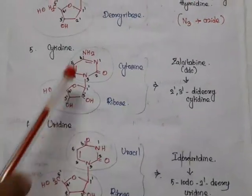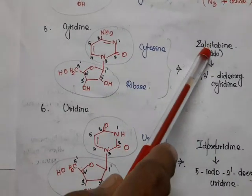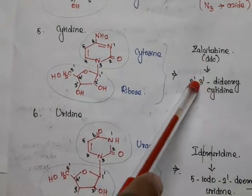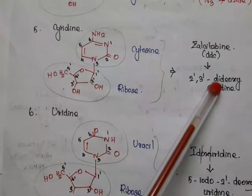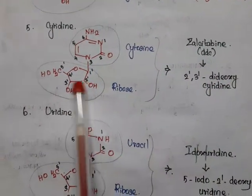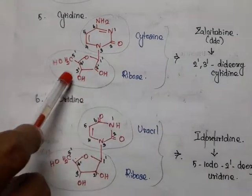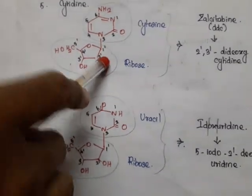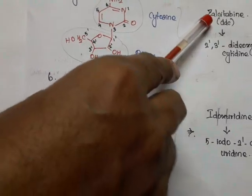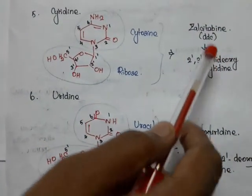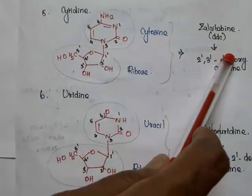Cytidine is the fusion of cytosine with ribose. Zalcitabine is chemically called 2',3'-dideoxycytidine. We have known cytidine. In dideoxycytidine, the hydroxy groups at the second and third positions are removed — only hydrogen remains at those positions. That is why zalcitabine is called DDC.